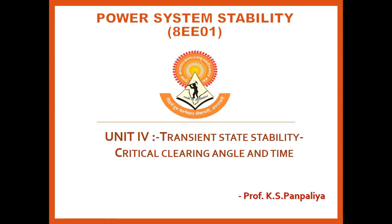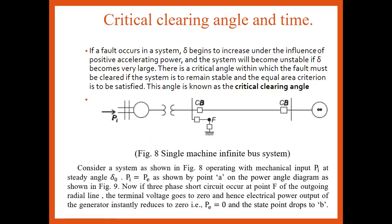Let us discuss the concept of the critical clearing angle and its time. Consider the single machine infinite bus system, where the machine is connected to the infinite bus. Pi is the input power connected to the synchronous generator, and a circuit breaker is connected in the system. Suppose a fault occurs at a middle point of the line, across the circuit breaker, and another circuit breaker is connected at the sending end — that is the input power point — and this is the output point.